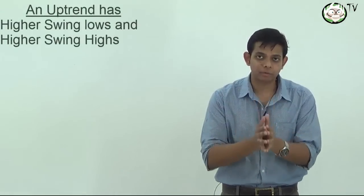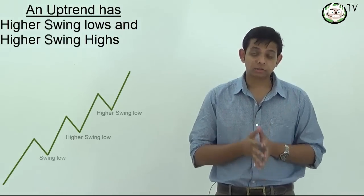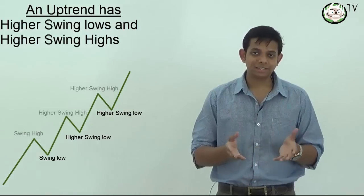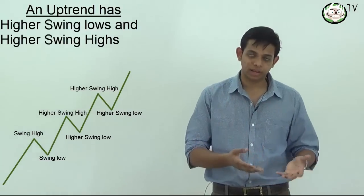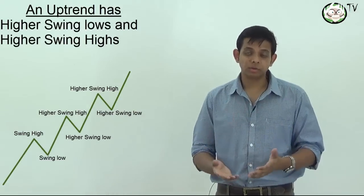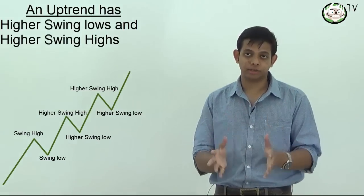Now when we are in an uptrend, we get higher swing lows and higher swing highs. It's easy to see on this chart that every swing low was higher than the previous one and every swing high was higher than the previous swing high. This is called an uptrend.